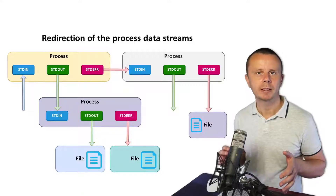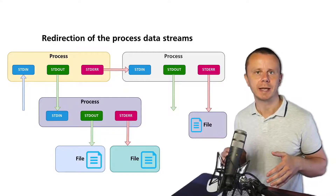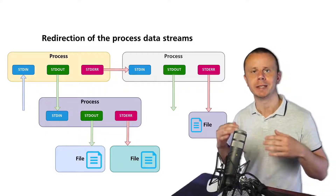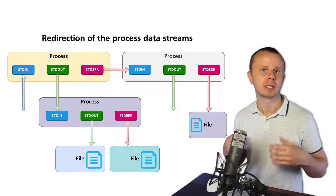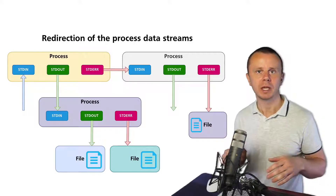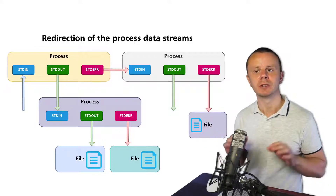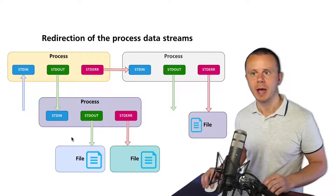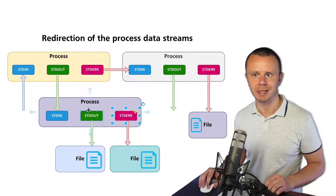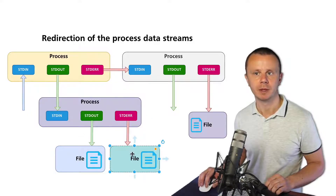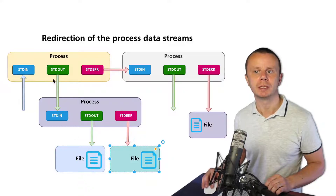We have just tried to send data from stdout and stderr to different files, and it was successful. We wrote different streams to different files. There were two different data streams — stdout and stderr — and two different files. But what if we want to send data from the stdout data stream to stdin of another process?